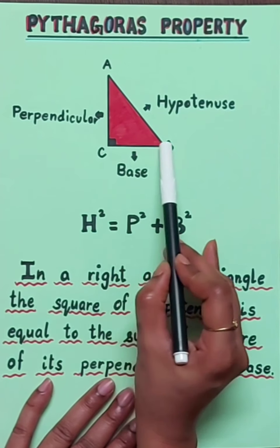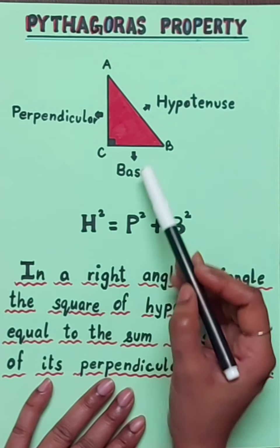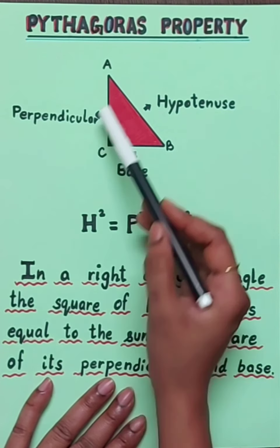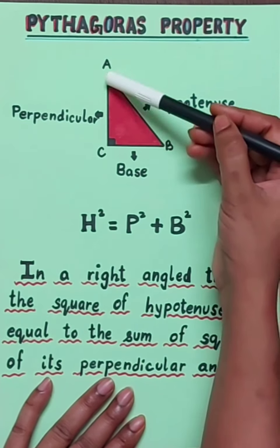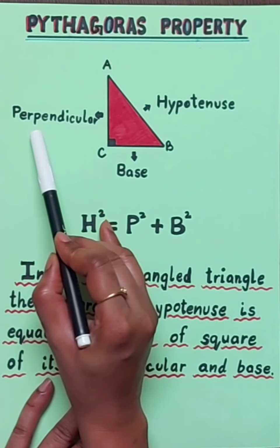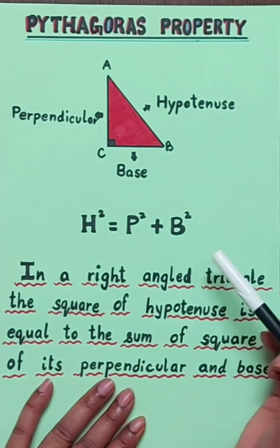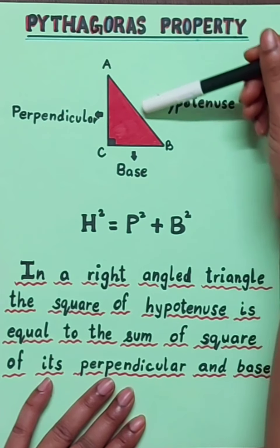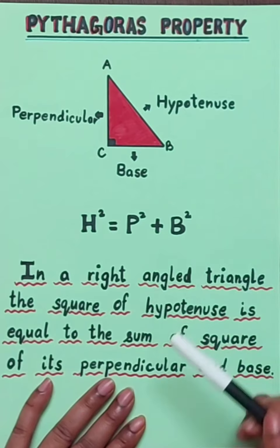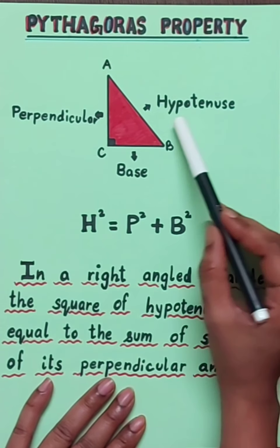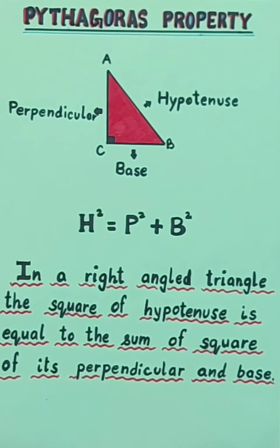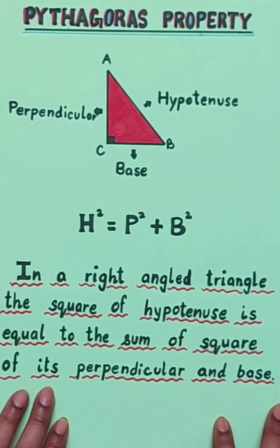The horizontal side BC or CB is called the base of the triangle. Now coming to this slanting side AB, which is the longest side of this triangle.